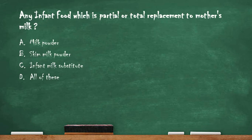Next question: any infant food which is a partial or total replacement to mother's milk is called — option A: milk powder. Option B: skim milk powder. Option C: infant milk substitute. Option D: all of these. The right answer is option C — infant milk substitute.